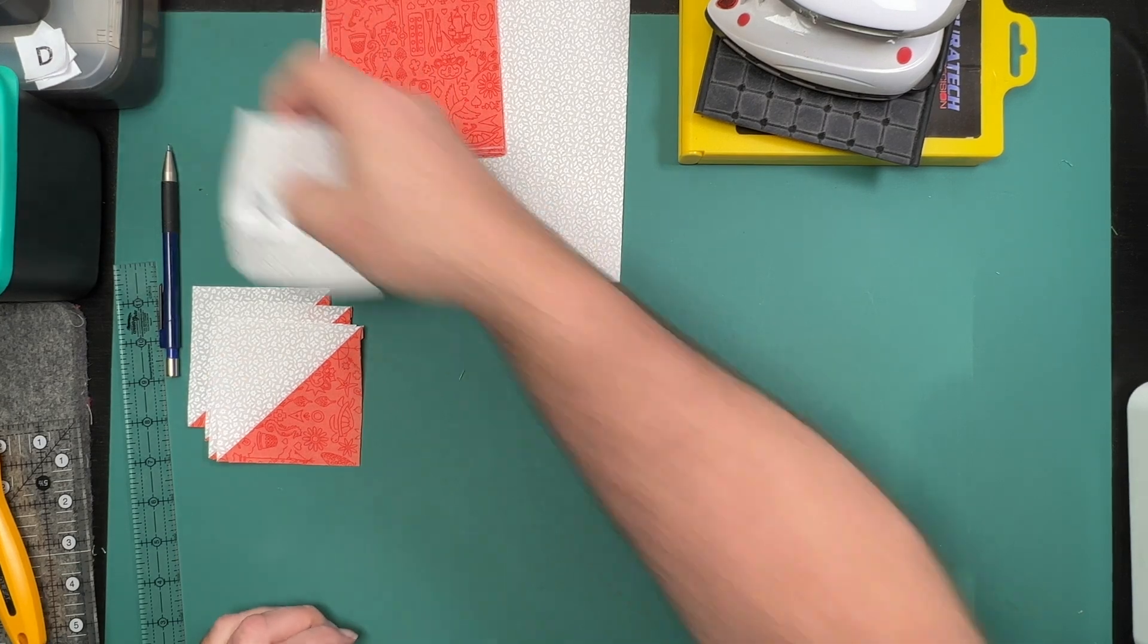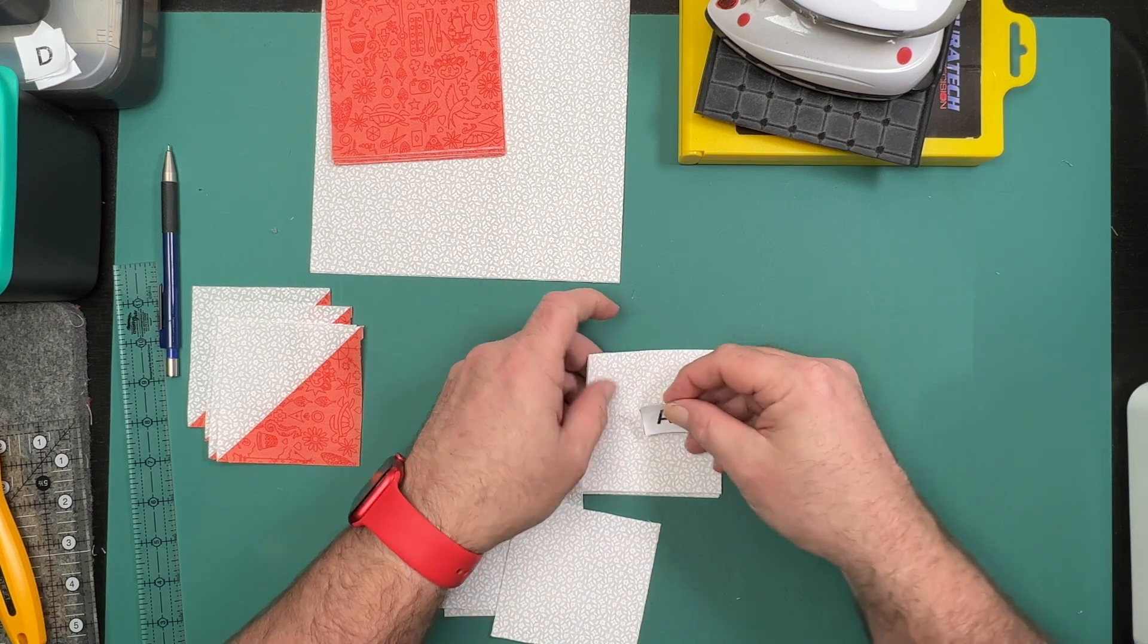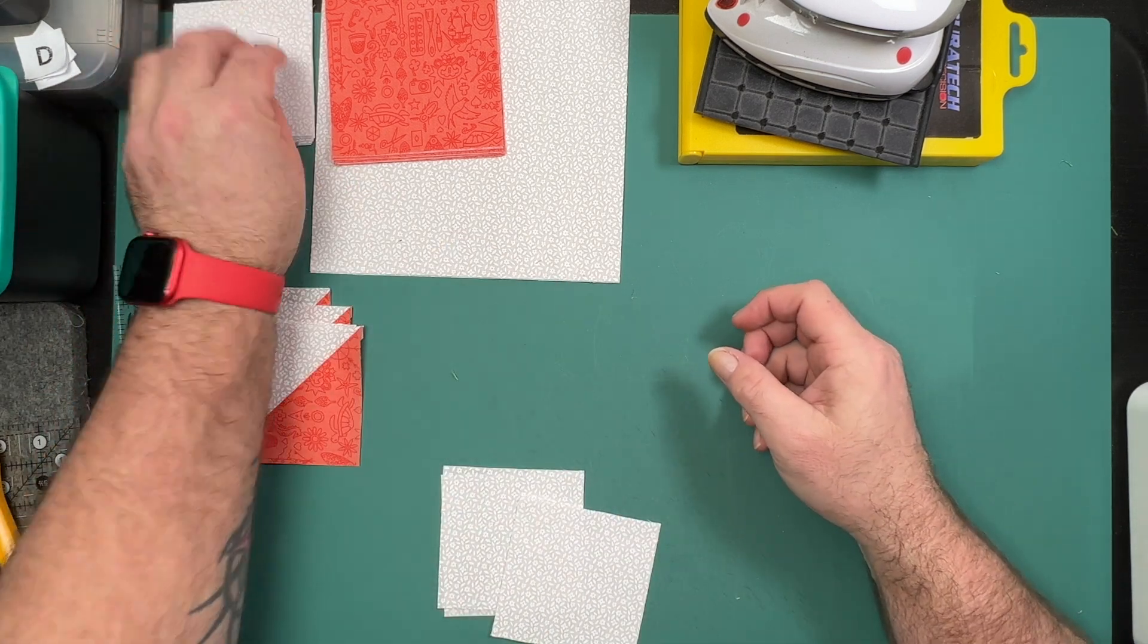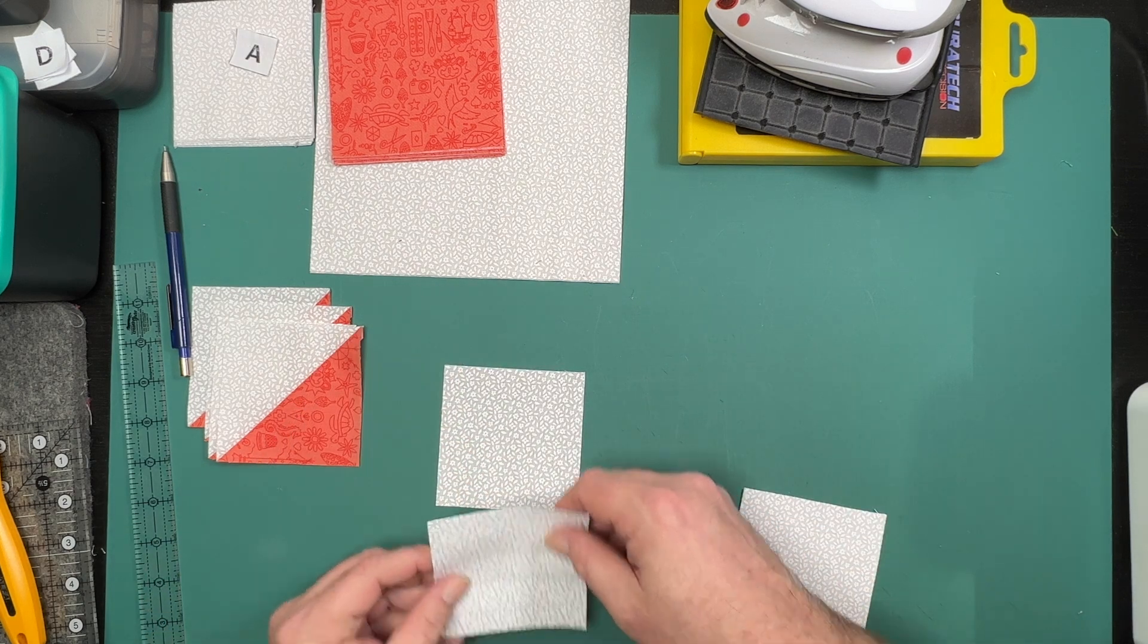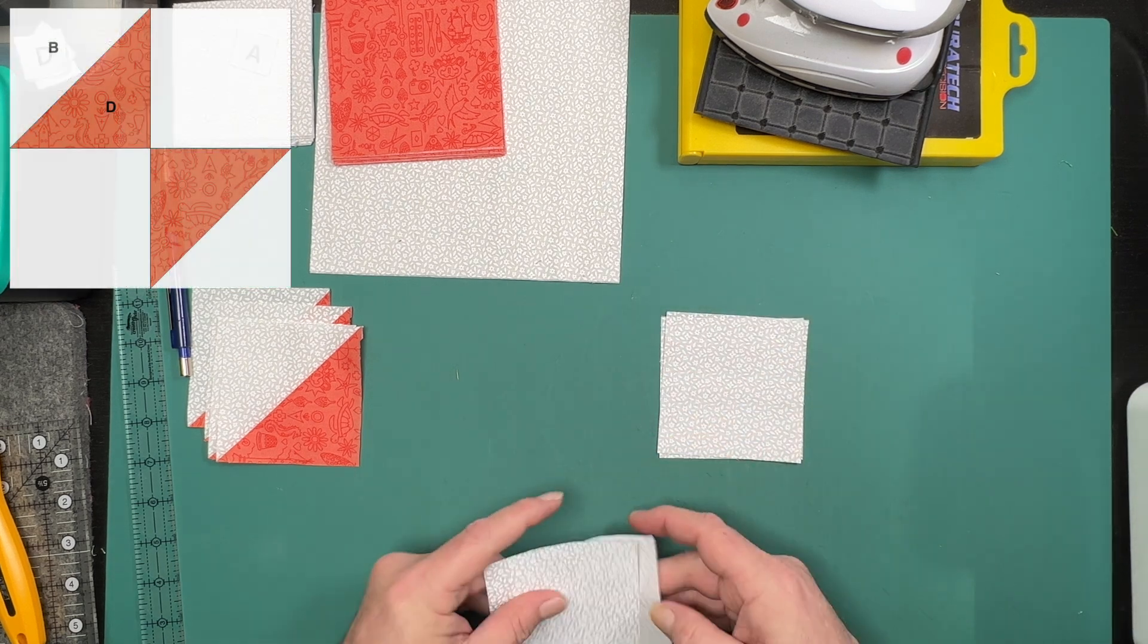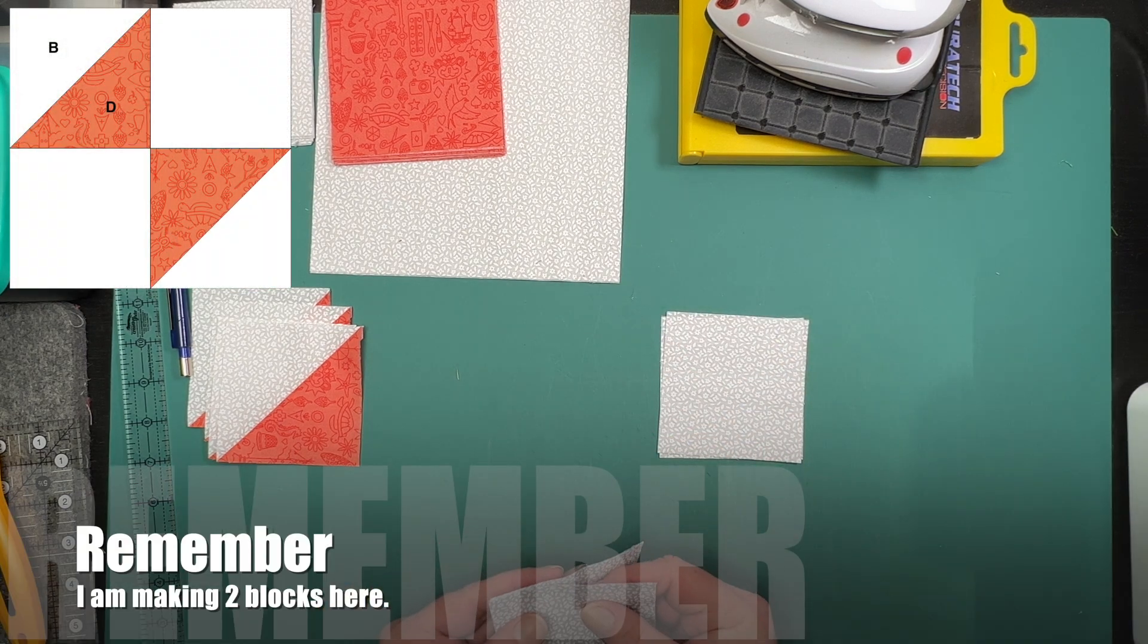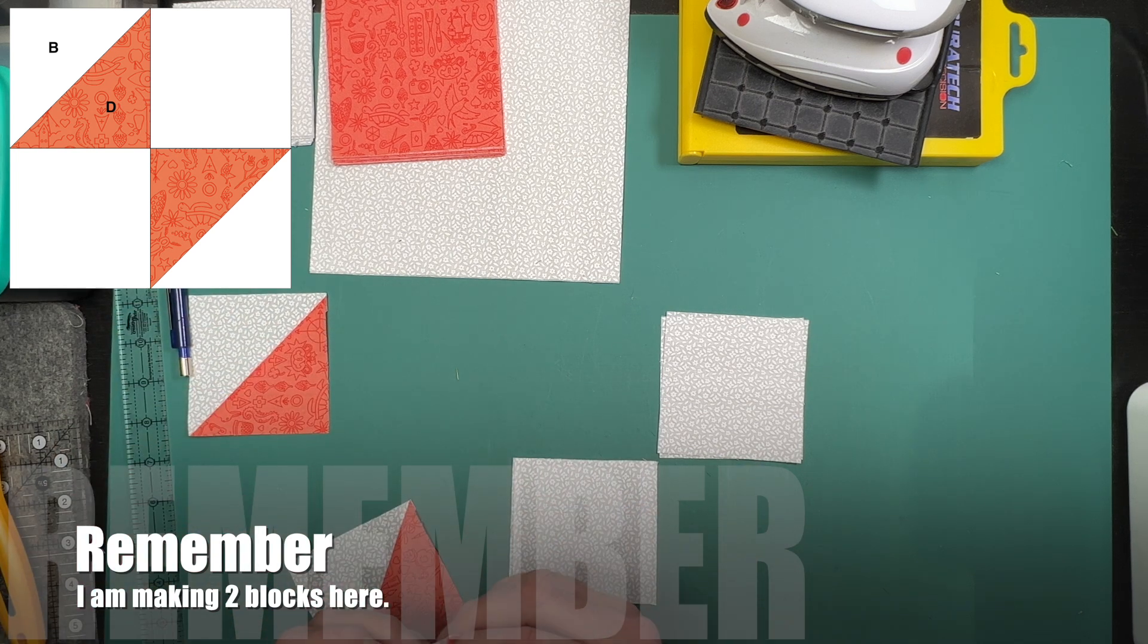Now that we have our half square triangles made and trimmed to perfection, we're going to grab four of our A squares and put the rest back aside. We're going to construct the middle of this week's block. To do that we're just going to be making a simple four patch and we'll lay it out as per the image in our pattern.